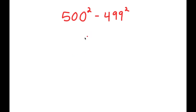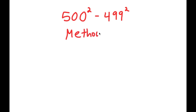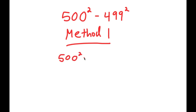Alright, so in this problem I have 500 squared minus 499 squared. I actually have two methods to solve this problem. For method 1, I'll first start by rewriting this: 500 squared minus 499 squared.